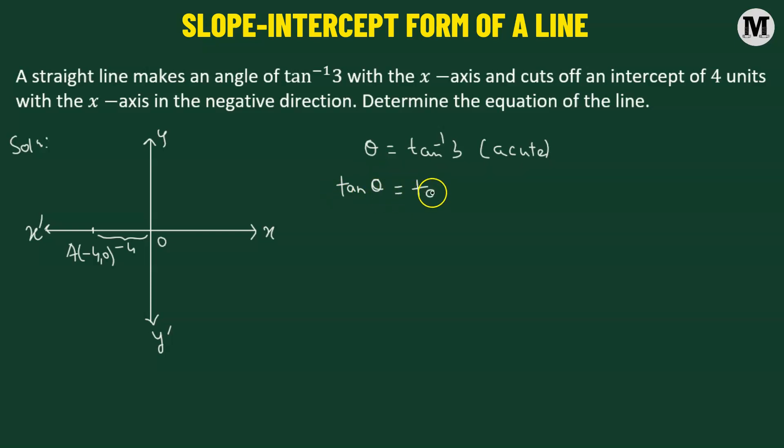So taking the tangent on both sides, we get tangent of tangent inverse of 3. Now tangent of tangent inverse of 3, that simply equals to 3. This is a positive value. So whenever our slope has a positive value, so tangent theta, which is denoted by m, then we consider the angle to be acute.